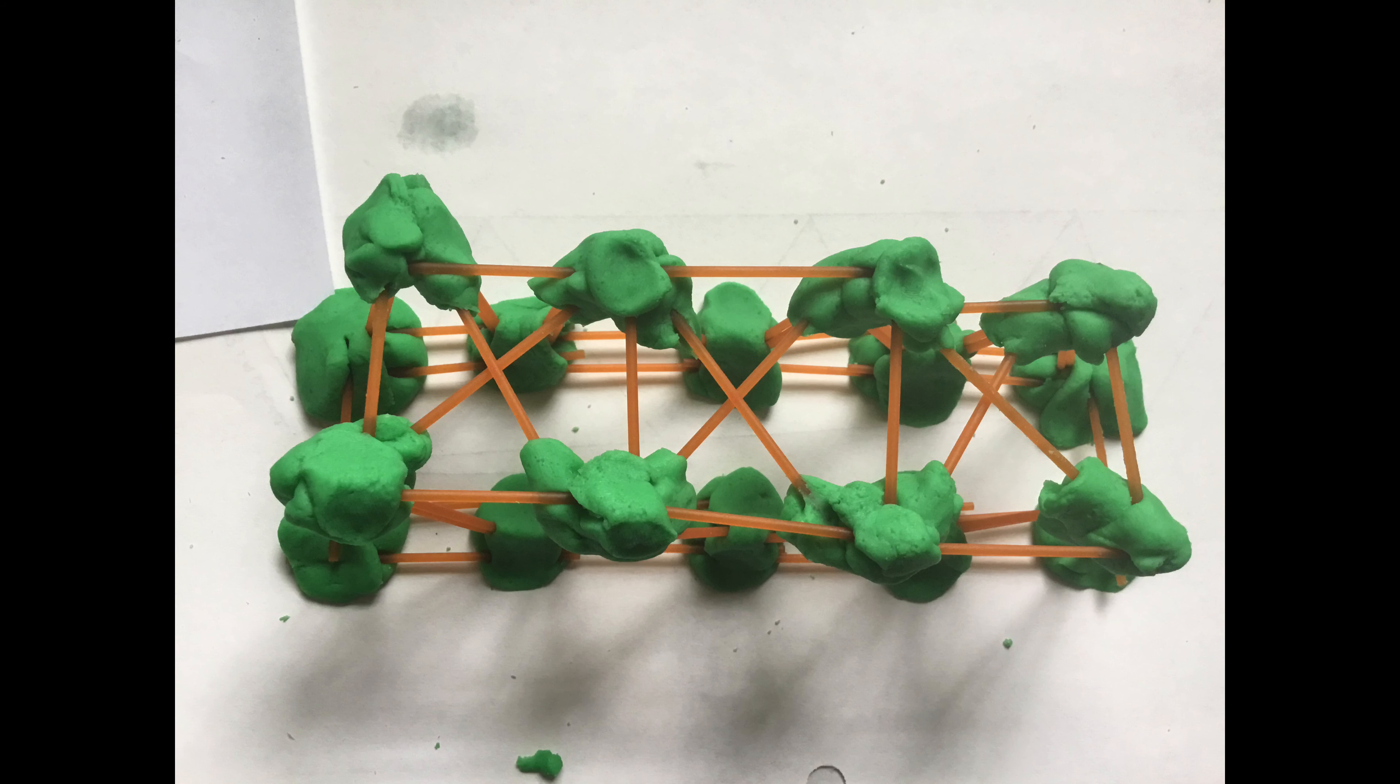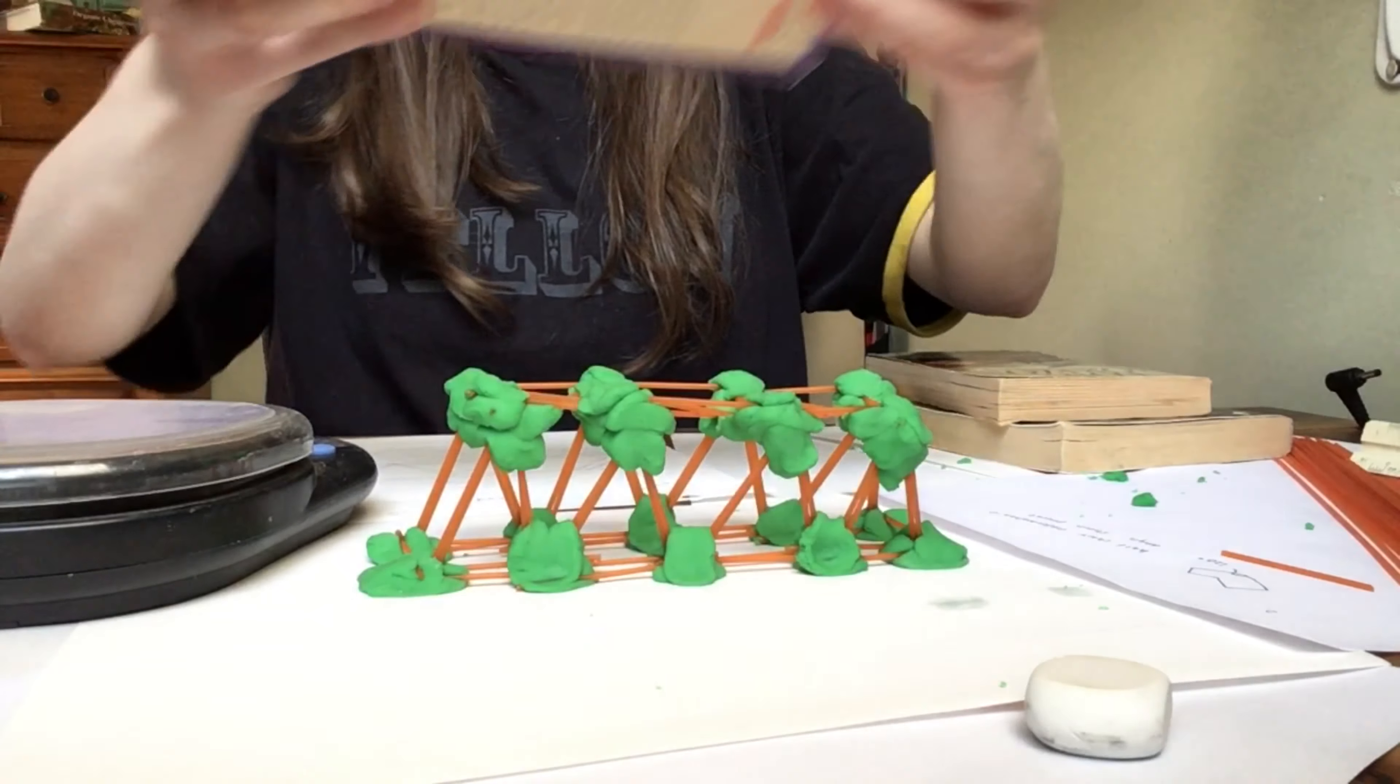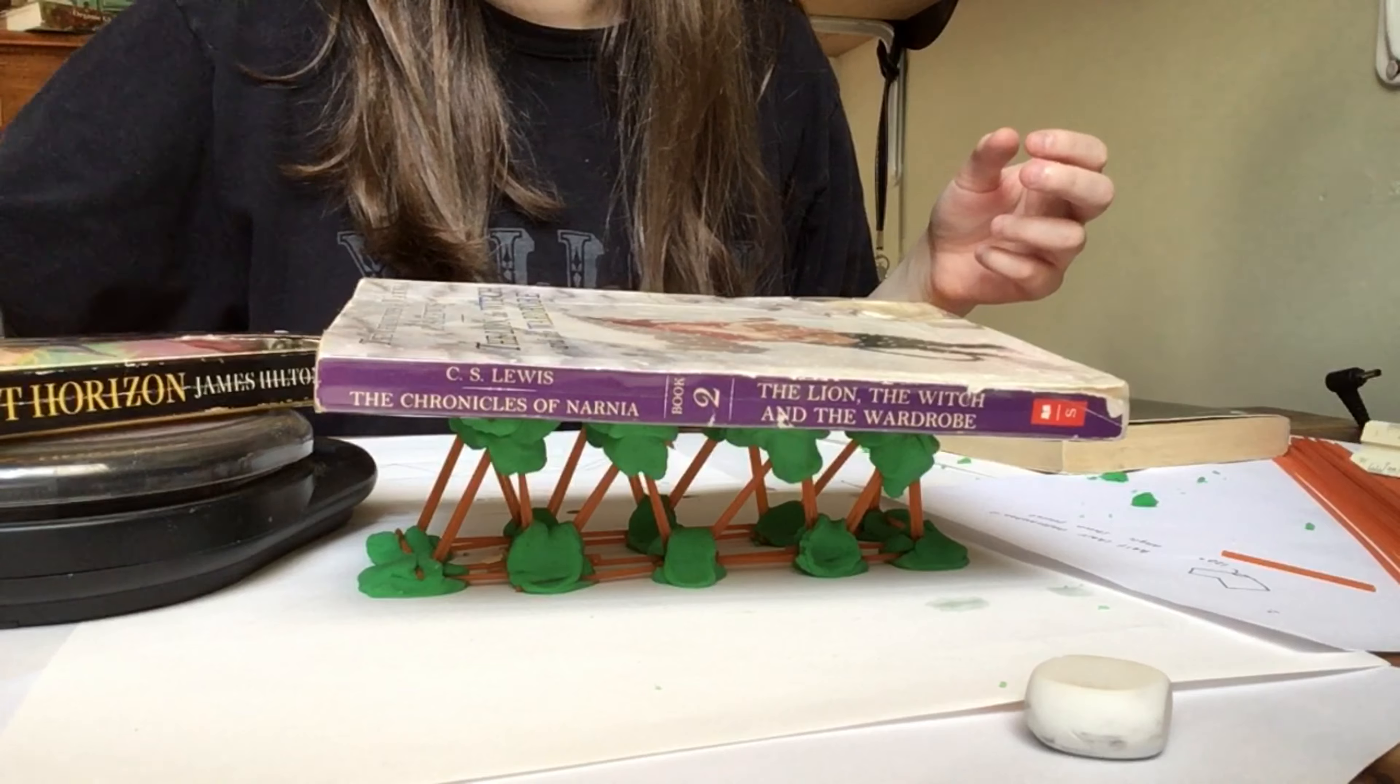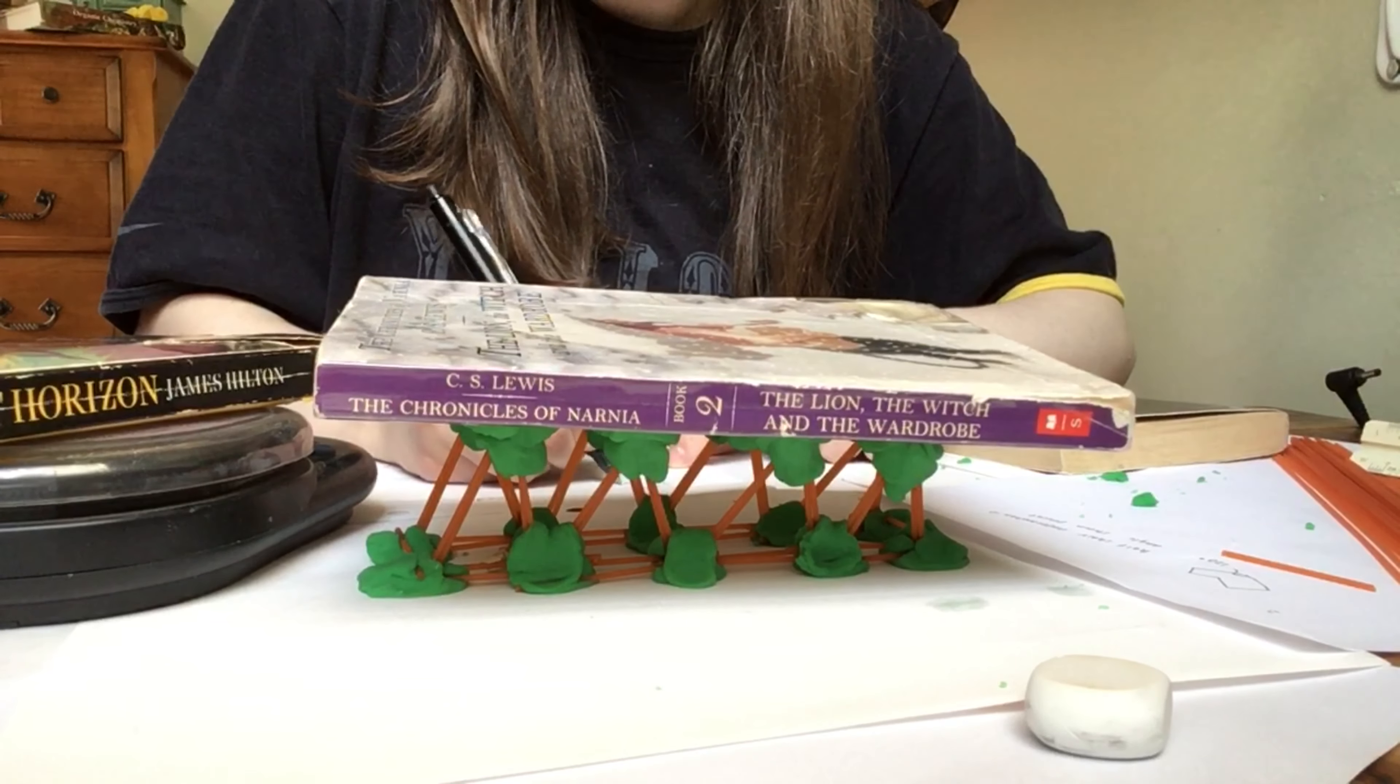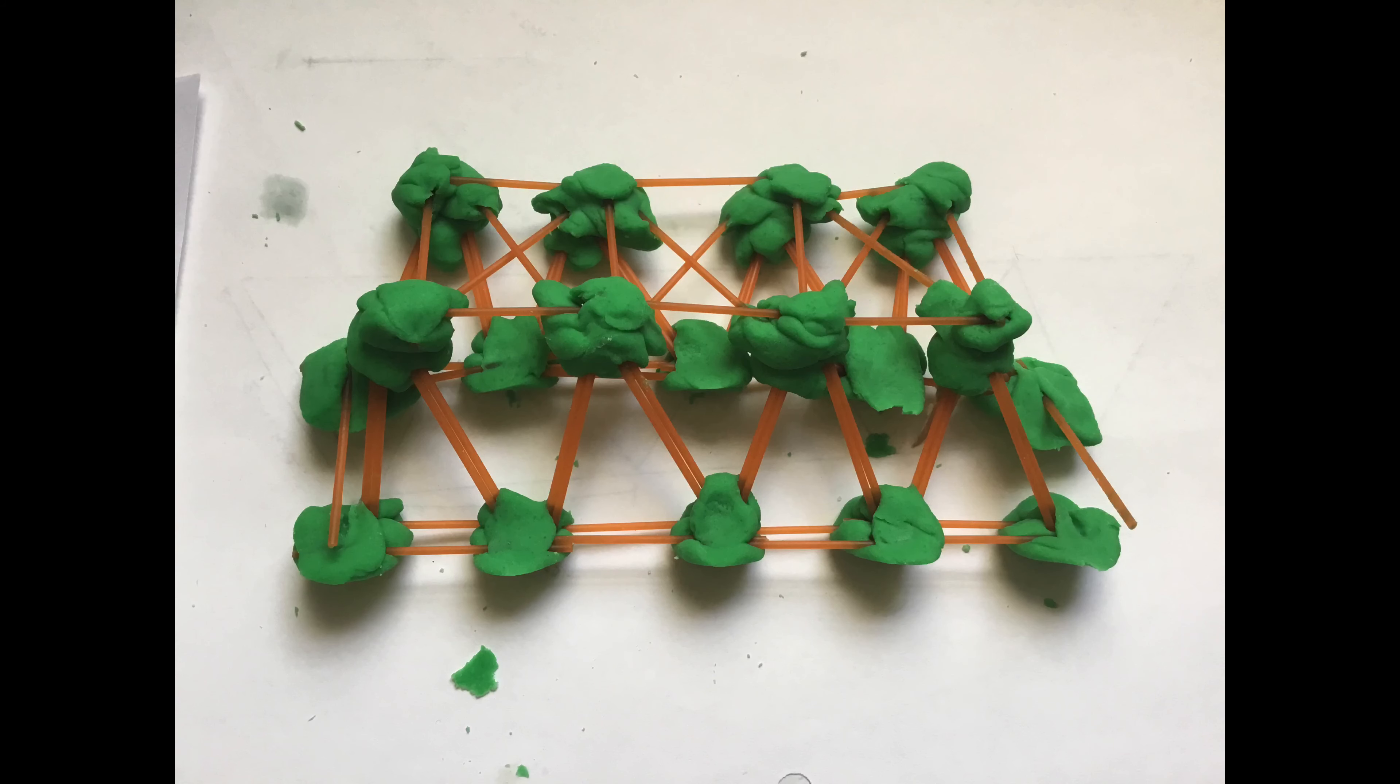So once you're done building your bridge, I think it would be best to allow the play-doh to dry for an hour, maybe two hours before you apply a load on your bridge. So here you can see I am testing my bridge. I allowed the play-doh to dry for around an hour, and what I did was I weighed each book just to determine the load here. So this first book was 5.1 ounces. Then I weighed my next book, which was an additional, I think, 4.2 ounces. I was recording these values as well. But whenever I put that on top, my bridge slanted and fell apart. So my bridge met its max load at 5.1 ounces.